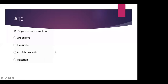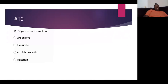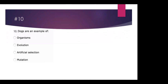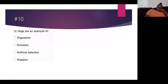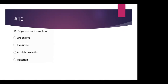Dogs are an example of artificial selection — absolutely. As humans, we artificially select. My neighbor has a Bernese mountain dog slash poodle, a Berniedoodle. There are so many different kinds. Humans have over time artificially selected these different breeds, and there are all these different types of dogs. Pretty cool. Are you guys ready for the next one?